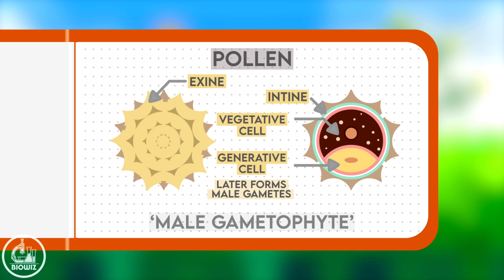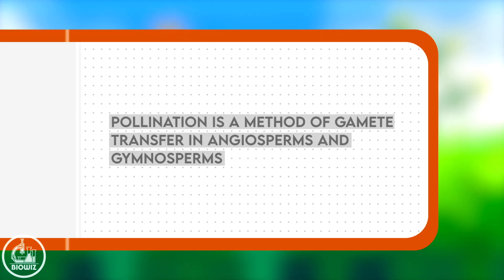Pollen represents the male gametophyte of angiosperms, i.e. it is responsible for the formation of their male gametes. So pollination is in fact the transfer of male gametes in higher plants to make fertilization possible.